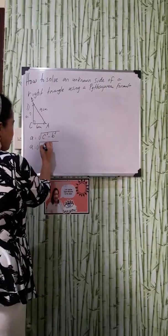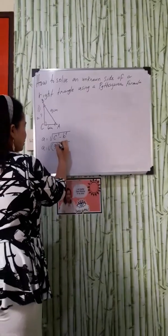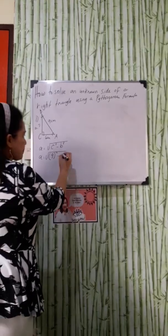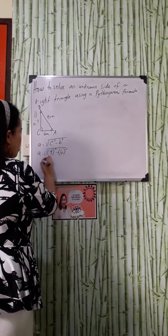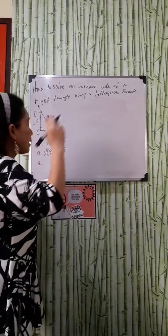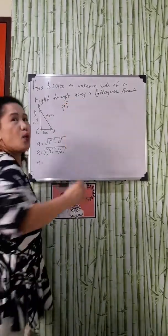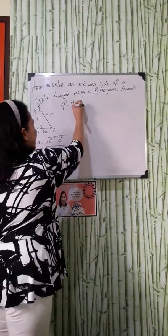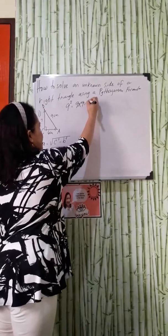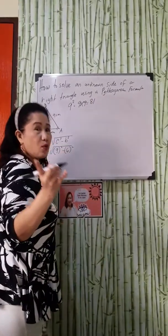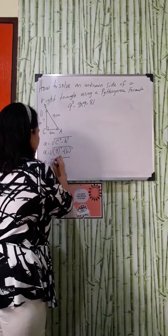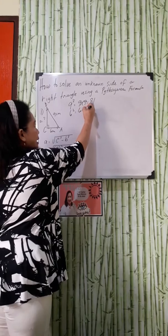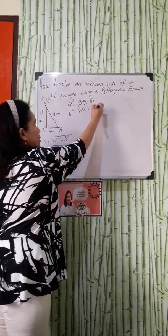We are going to write here 9 squared minus our side B which is 6 squared. When we say 9 squared, we are going to multiply 9 two times. That will be 9 times 9 that is equal to 81. That will be 81 minus 6 squared means 6 times 6 that is equal to 36.